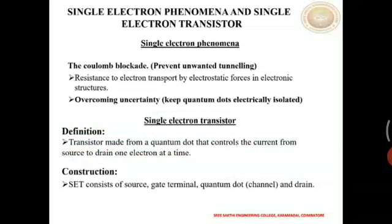In electronics, a transistor is the most important device which is used as a switch and amplifier. In computers it is used as a switch to turn on and off. In older days transistors were large in size but now they are reduced to nanoscale. It required 10 million electrons to switch on a transistor in the 1970s, but now a current transistor requires closer to 10,000 electrons.